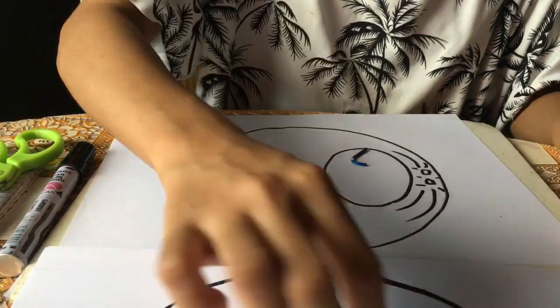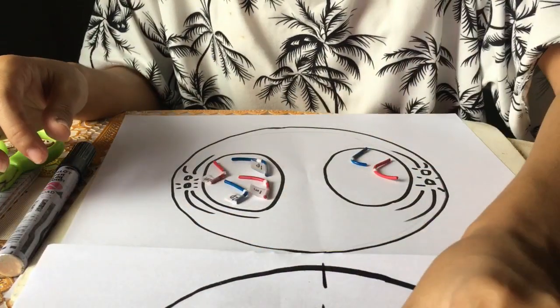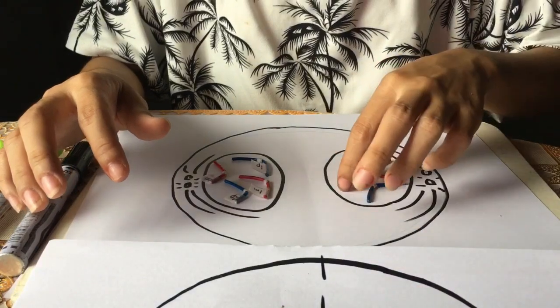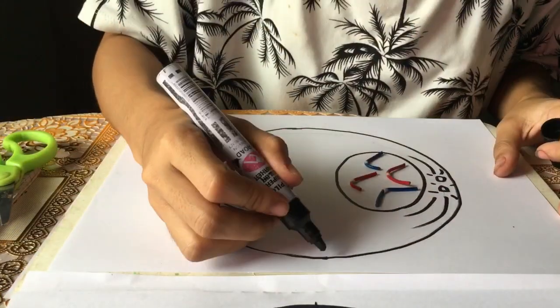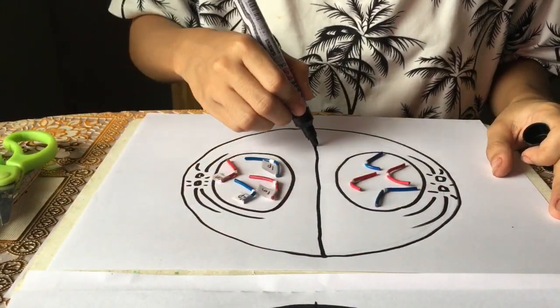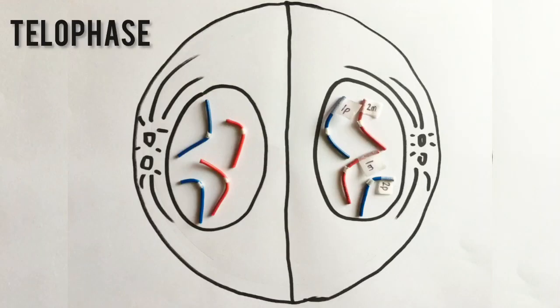In telophase, the chromatids arrive at opposite poles of the cell, and new membranes form around the daughter nuclei. The spindle fibers disperse and cytokinesis, or the partitioning of the cell, may also begin during this stage.